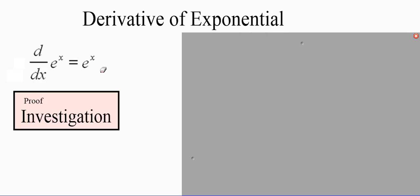Welcome. What we're going to do today is talk about how to prove that the derivative of e to the x equals e to the x. Then we'll talk about the other exponential function and how to prove that the derivative of a to the x equals a to the x times the natural log of a. A lot of students sometimes have confusion on this, so without further ado, let's get started.